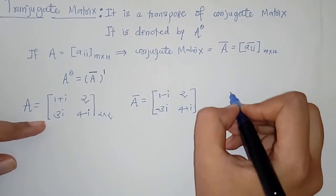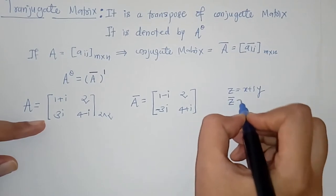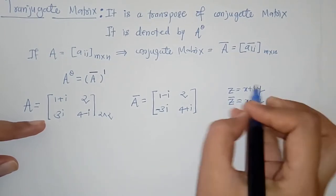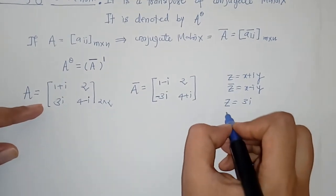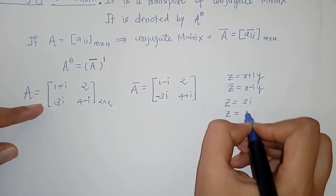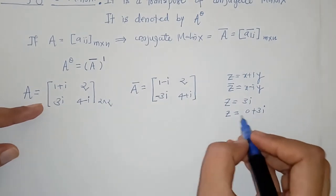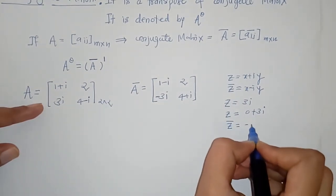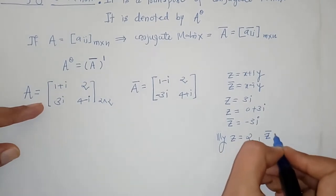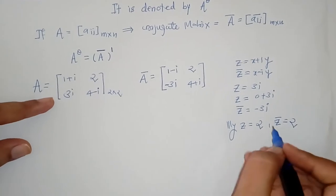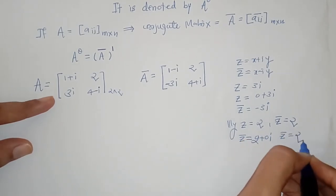We can review complex conjugates briefly. If z = x + iy, then its conjugate is x − iy. For example, if z = 3i, we write this as 0 + 3i, so its conjugate is −3i. Similarly, if z = 2, we write it as 2 + 0i, so its conjugate is also 2.